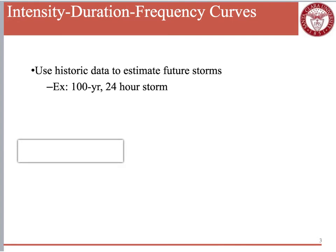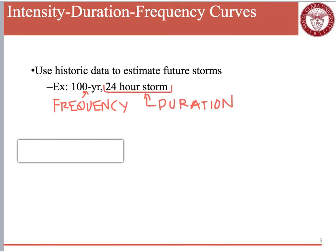In the terminology '100-year, 24-hour storm,' we have both a duration and a frequency given. The frequency is that 100-year, which is what we call a return period. It tells you how often you would expect a storm of that intensity — meaning we would expect such a storm once every 100 years. The 24-hour is the duration, meaning the time between the very first raindrop and the last raindrop is 24 hours.